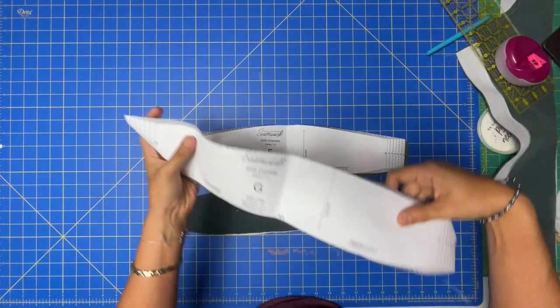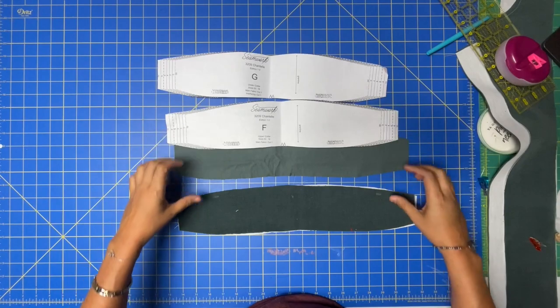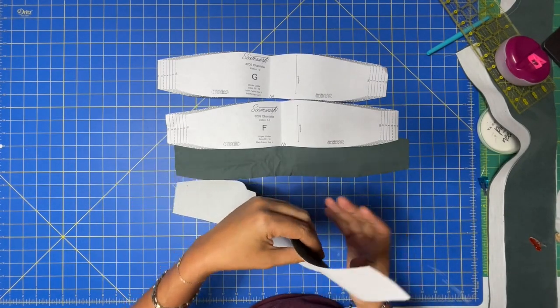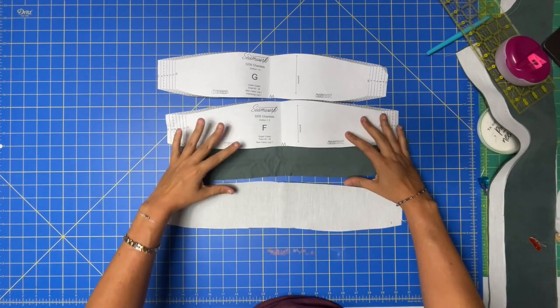This is one of the steps where you're going to want to really take your time and be super accurate. So take a deep breath, take breaks when you need them, and let's get started making this collar. You are going to have two collar pieces: F and G. G is the one that got interfaced.